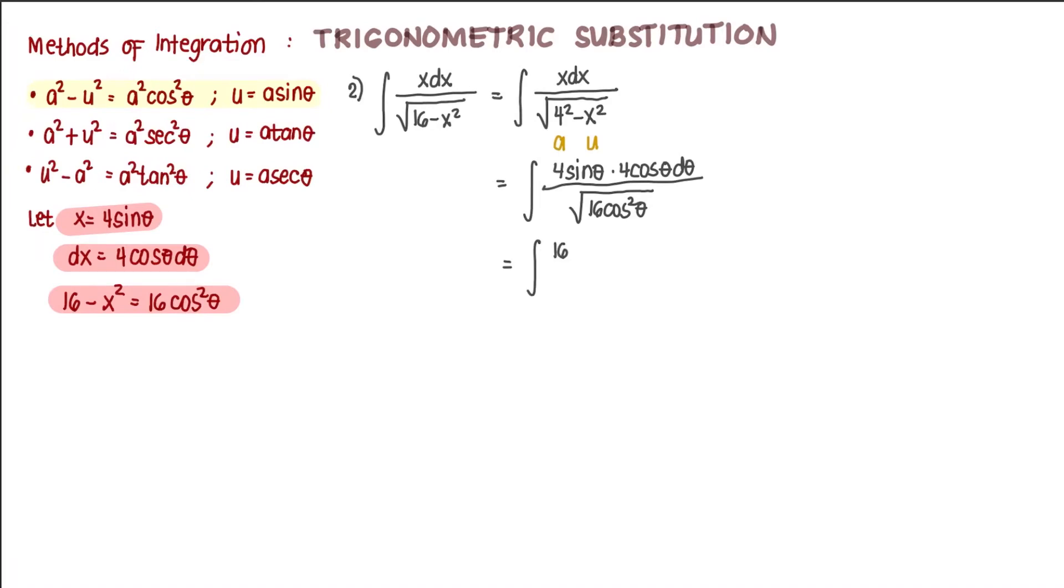We simplify. So this is 16 sine theta, cosine theta, d theta, and extracting the square root, that's 4 cosine of theta. We can cancel out cosine theta, and divide 16. So that's 4 integral of sine theta d theta.